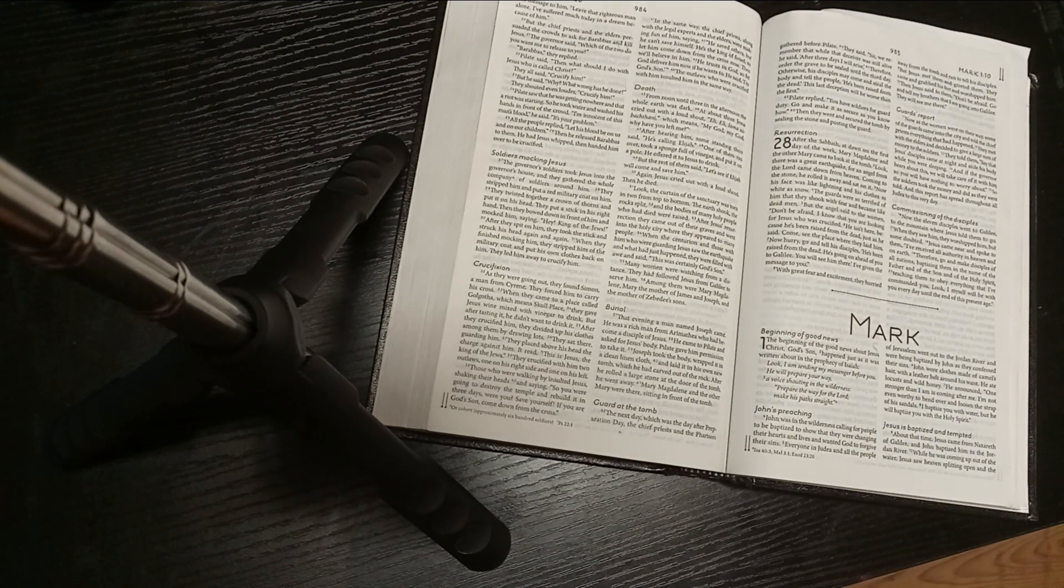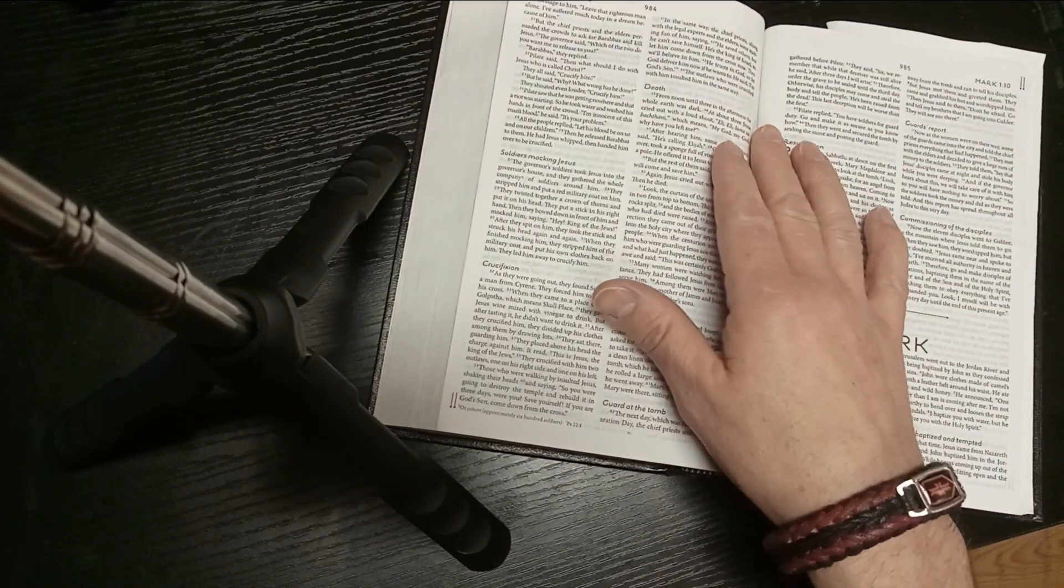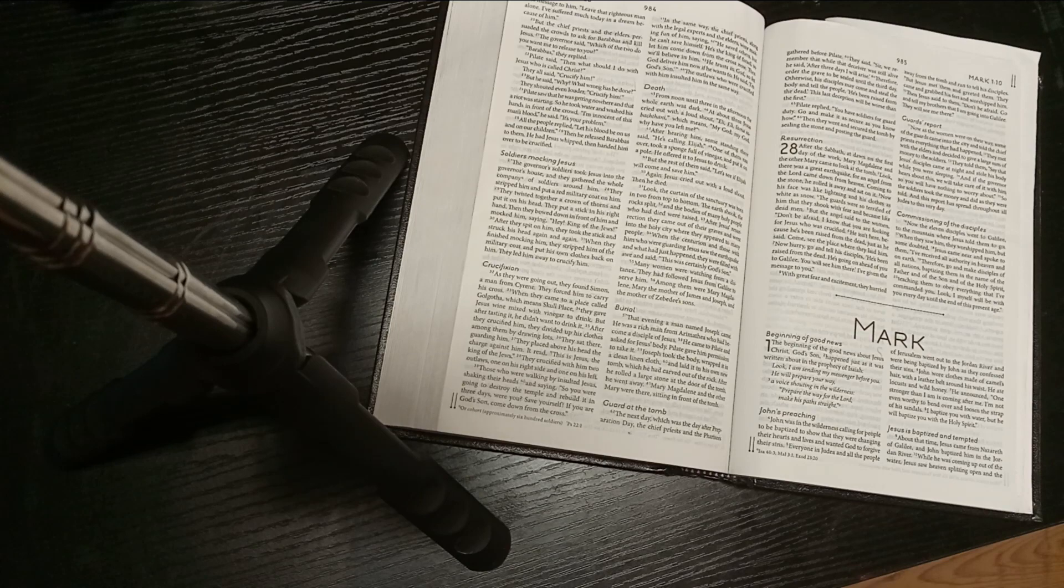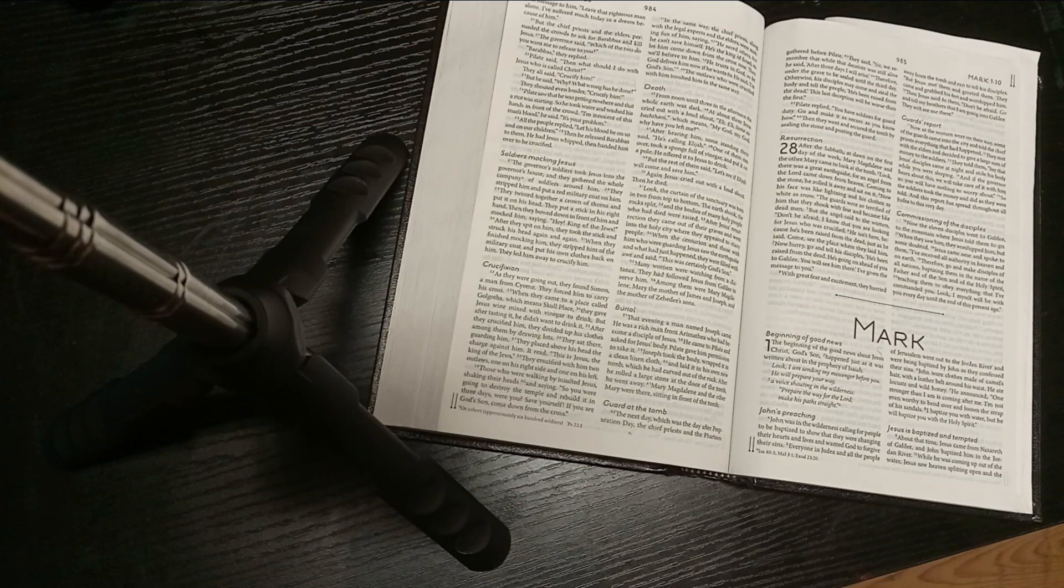The next day, which is the day after Preparation Day, a Jewish thing for Passover, the chief priests and the Pharisees gathered before Pilate. They said, 'Sir, we remember that while the deceiver was still alive,' referring to Jesus, 'he said, After three days I will arise. Therefore, order the grave to be sealed until the third day. Otherwise, the disciples may come and steal the body and tell the people, He's been raised from the dead. This last deception will be worse than the first.' Pilate replied, 'You have soldiers for guard duty. Go and make it as secure as you know how.' Then they went and secured the tomb by sealing the stone and posting the guard.